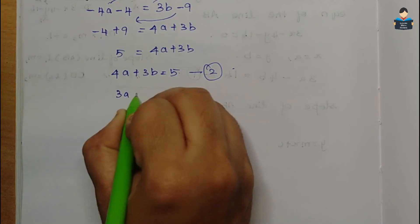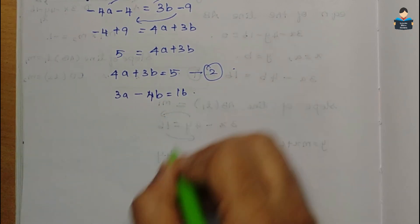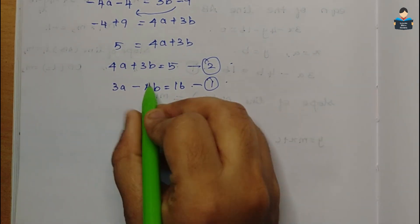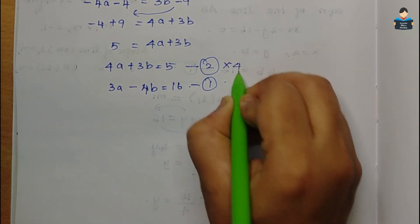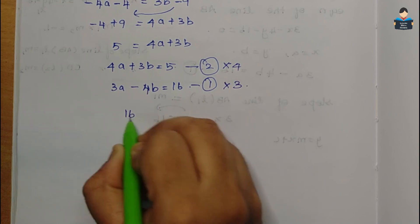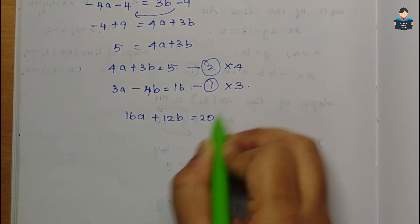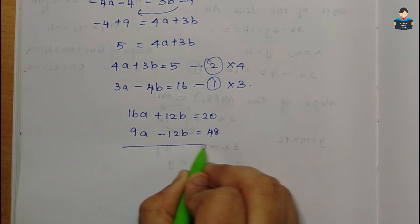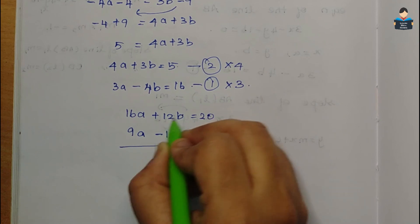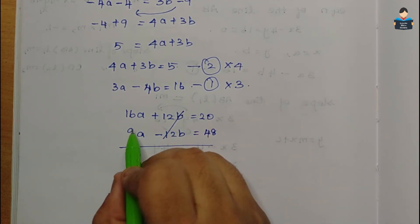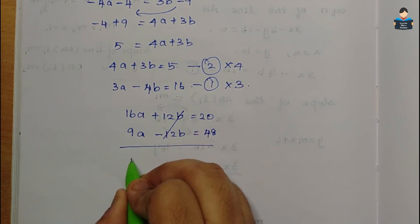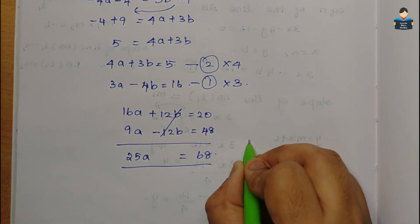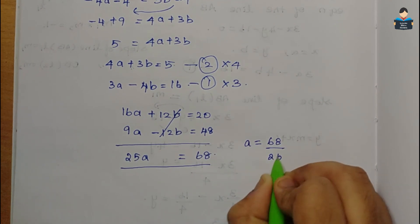Using elimination on the two equations: 4a + 3b = 5 and 3a - 4b = 16. Multiply equation 1 by 4 and equation 2 by 3, then add to eliminate b: 16a + 9a = 20 + 48, giving 25a = 68. Therefore a = 68/25.